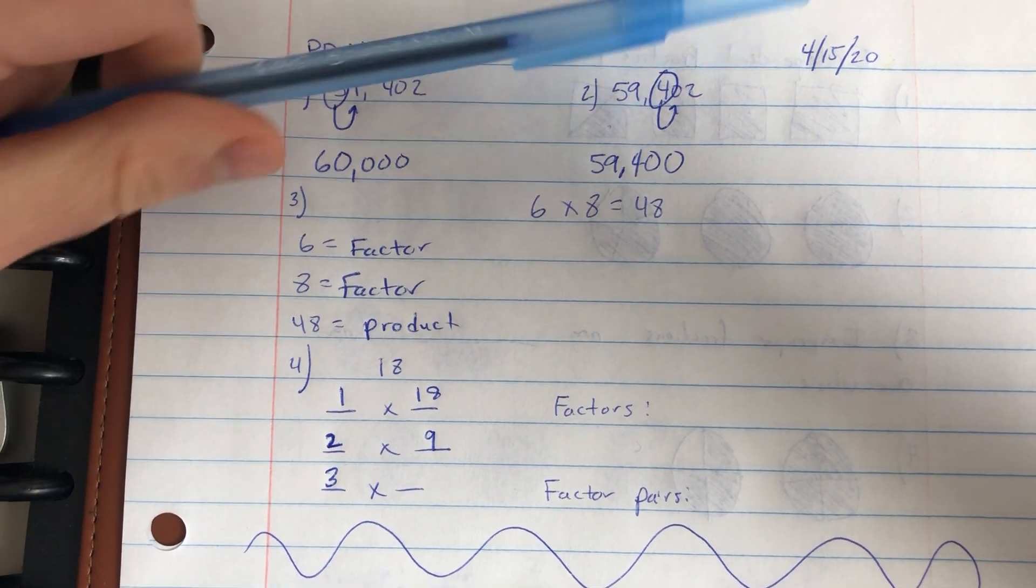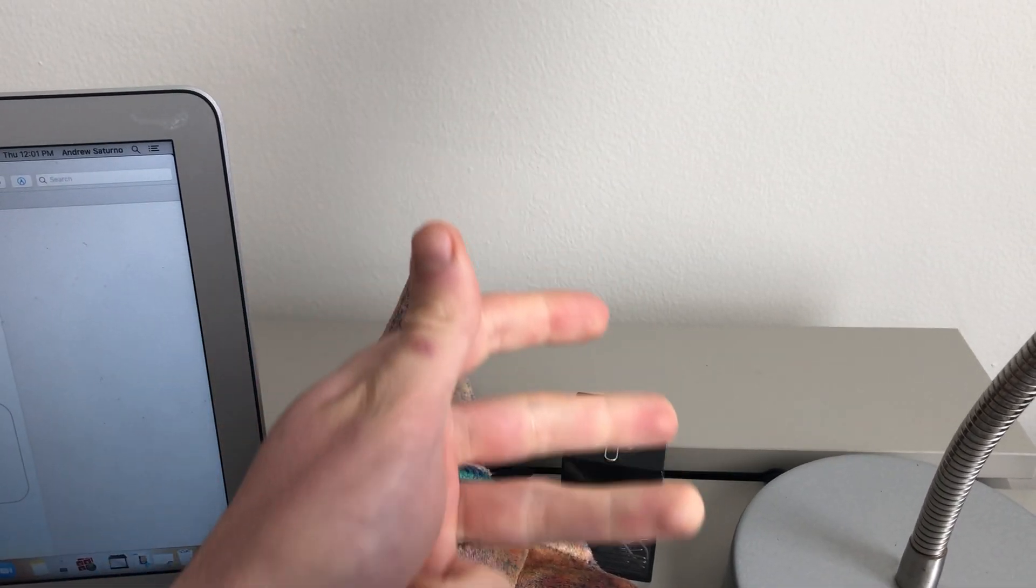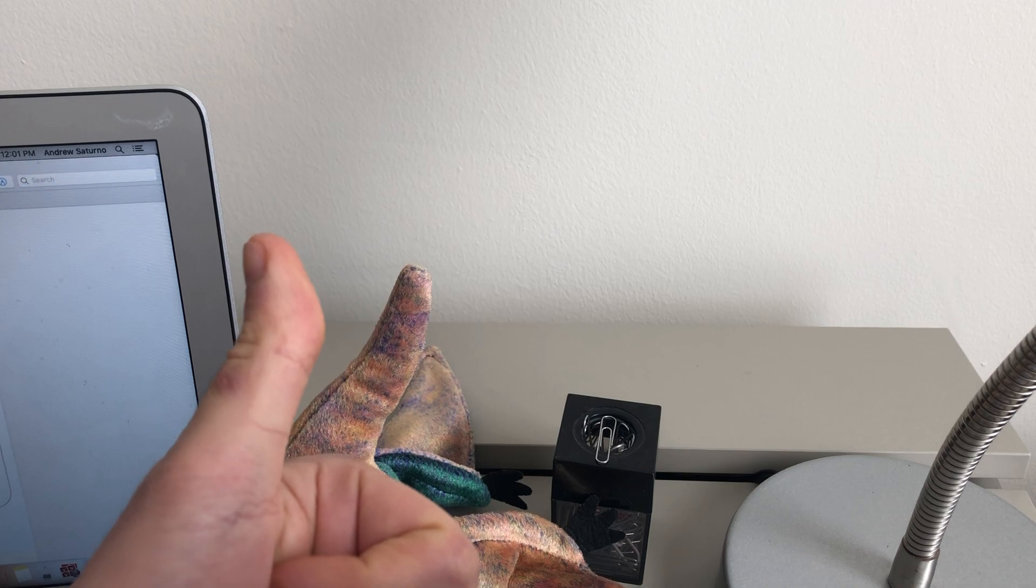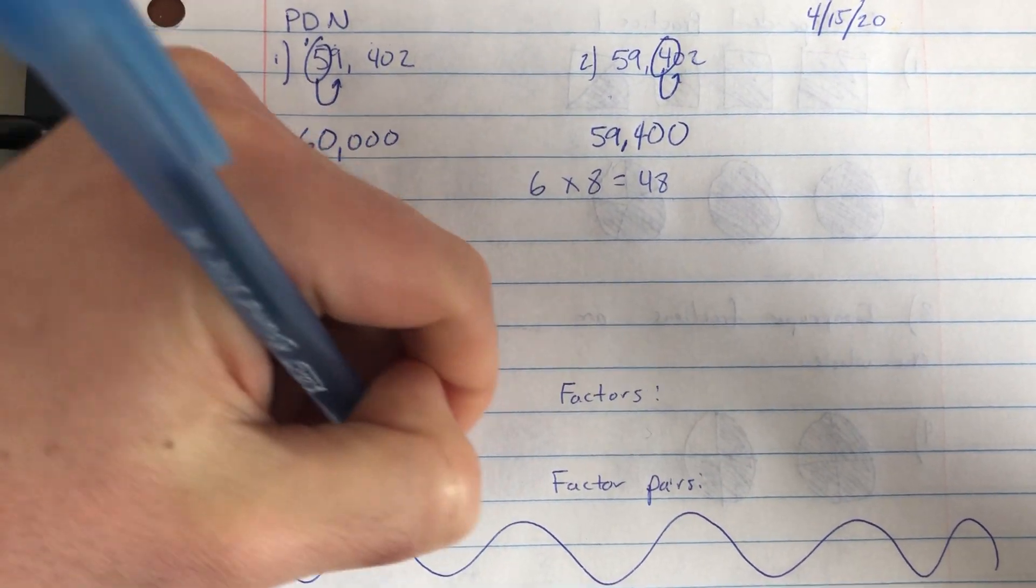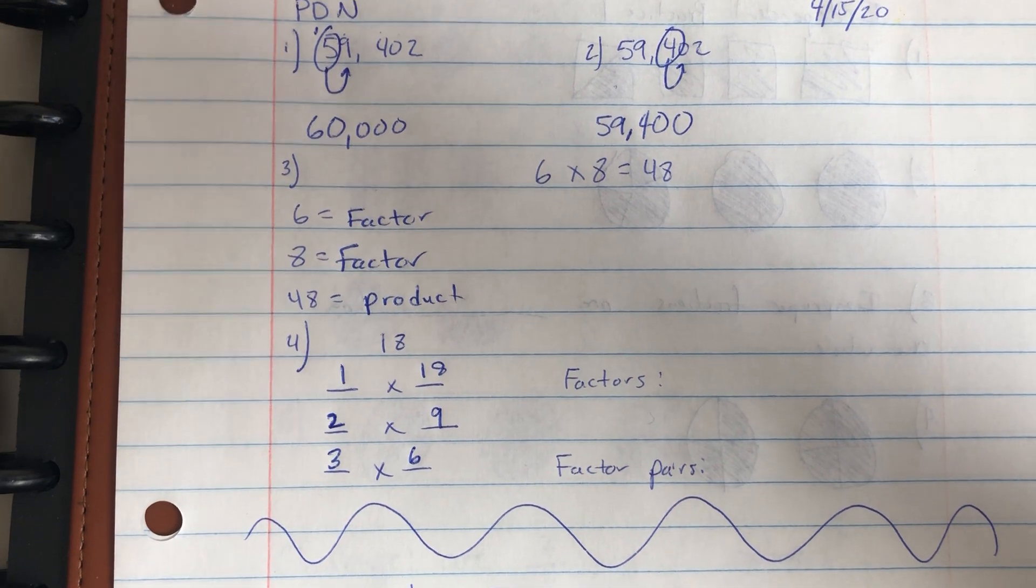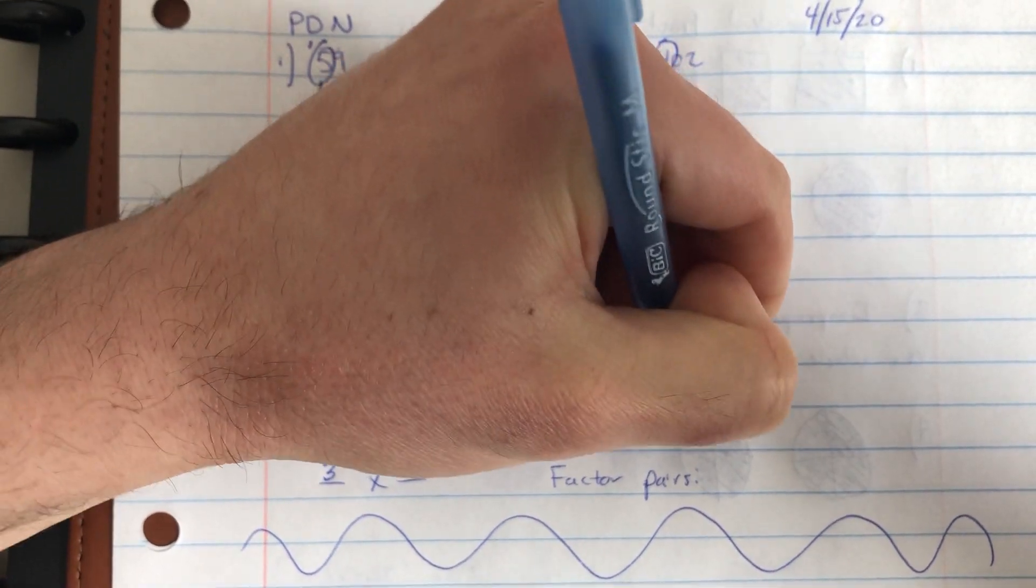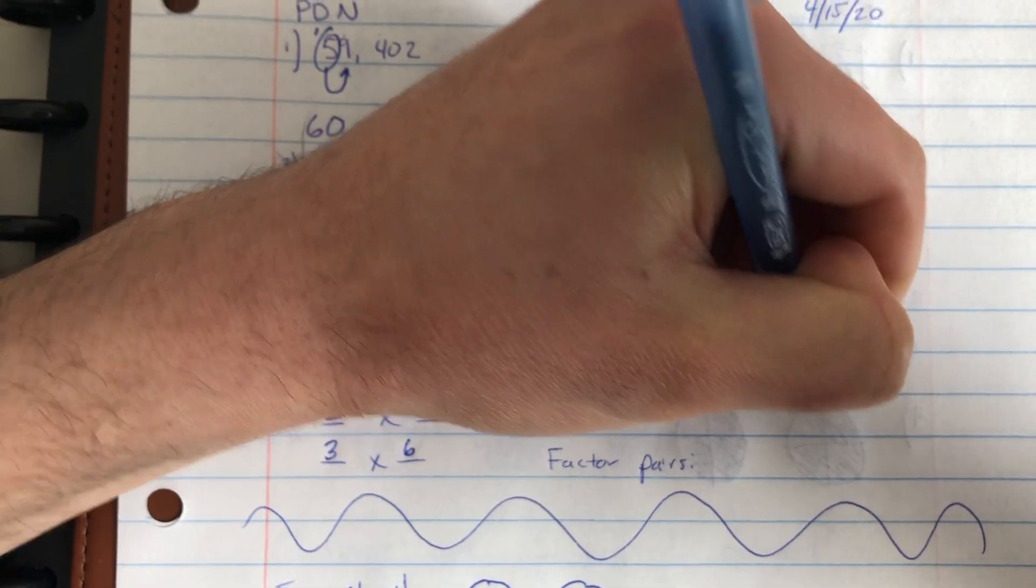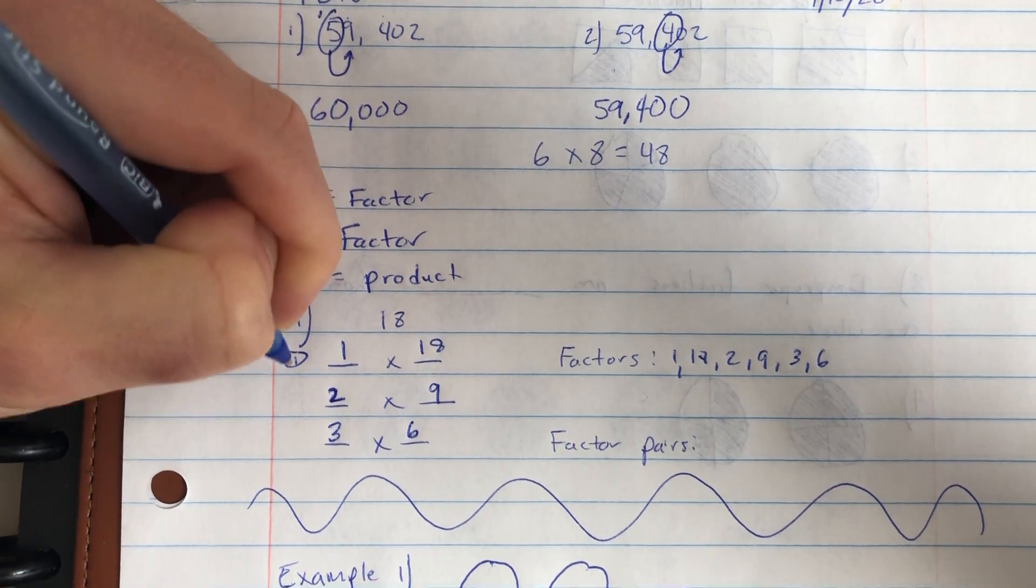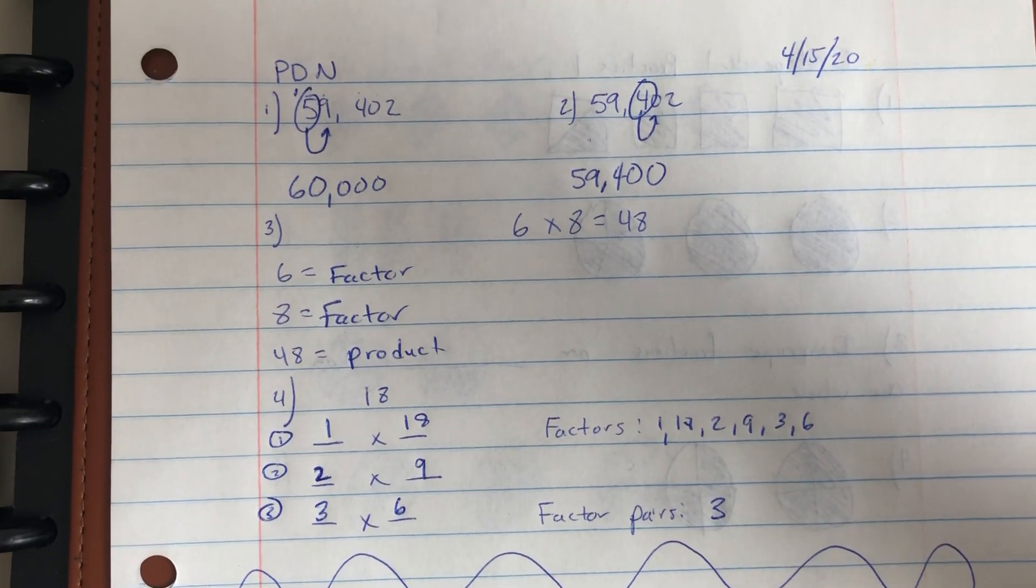So now 3 times what equals 18? 3, 6, 9, 12, 15, 18. 3 times 6 equals 18. And those are my factors. 1, 18, 2, 9, 3, and 6 are all my factors. The pairs are 1, 2, 3. I have 3 factor pairs.